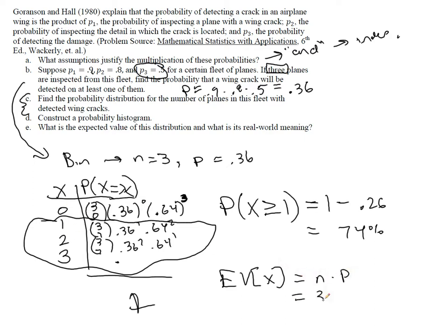But if we have three planes and we would expect that 36% are caught, three times 0.36 would be 1.08. So that means we would expect, on average, that about one plane is caught.